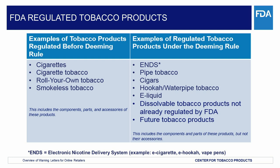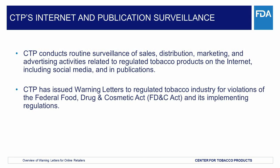In fulfilling FDA's mandate to regulate the sale, distribution, marketing, and advertising of tobacco products, FDA's Center for Tobacco Products conducts routine surveillance of the Internet and publications, including online retailers and social media. FDA's surveillance includes regulated tobacco products and provisions that are currently in effect. In instances where our surveillance efforts reveal violations of the FD&C Act and its implementing regulations, CTP will promptly take appropriate regulatory action. We will be reviewing some examples of violations under the FD&C Act and warning letters that have recently been issued.